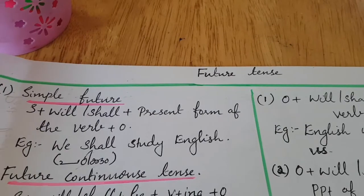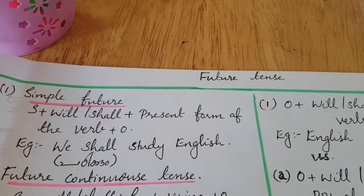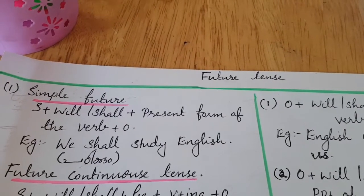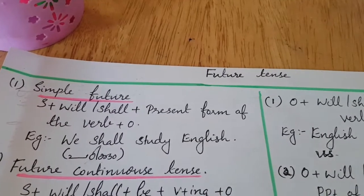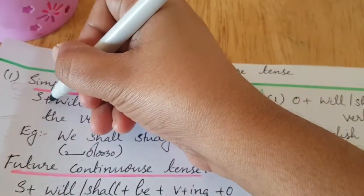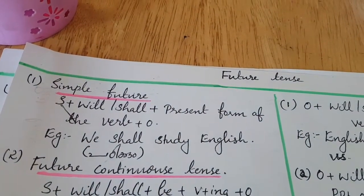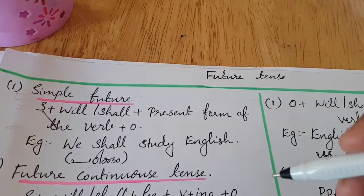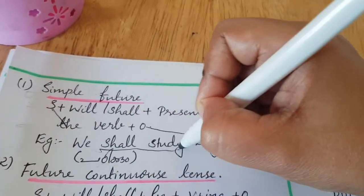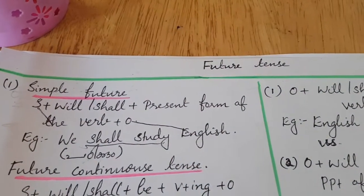The base form of the verb is used in simple future. Then the object. For example: 'We shall study English.' Subject — we; then will or shall — shall; then study; and object — English.